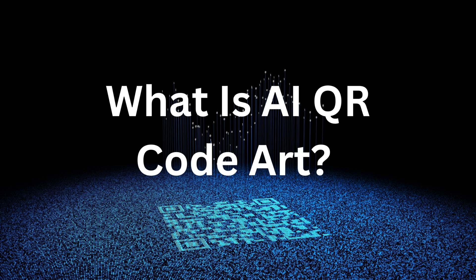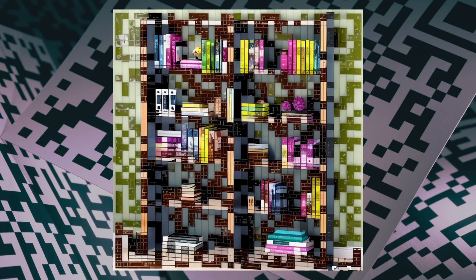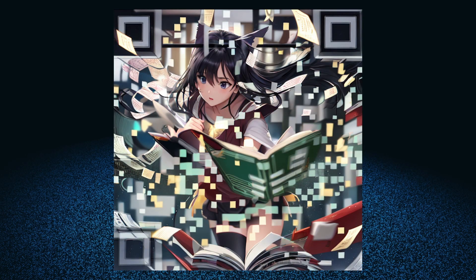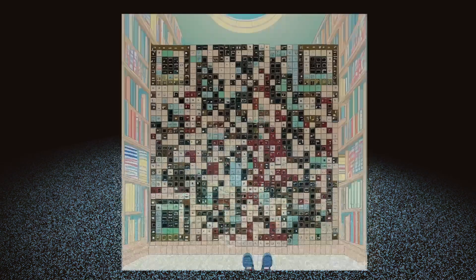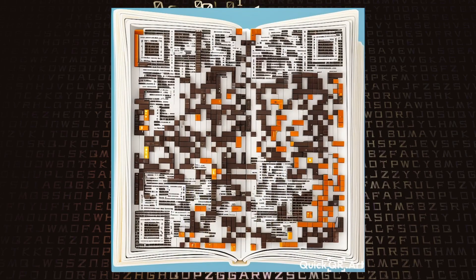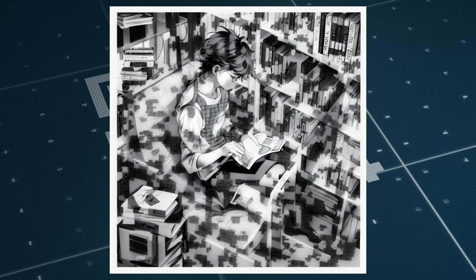These are QR codes that are created using artificial intelligence models that have learned from many pictures. The result is a QR code that not only looks great but also serves a practical purpose. When you scan it, the QR art takes you to a specific web page, video, or other media. And because these QR codes are themselves stunning pieces of art, it's like getting two things in one package — functionality and beauty.